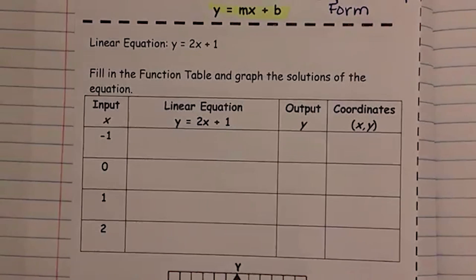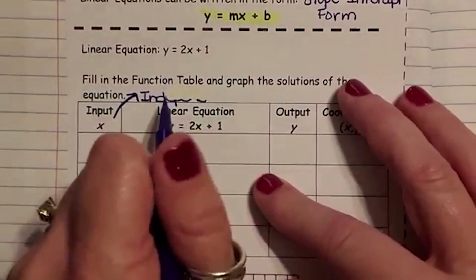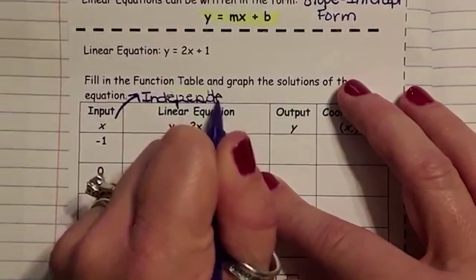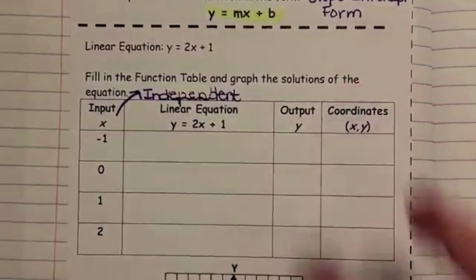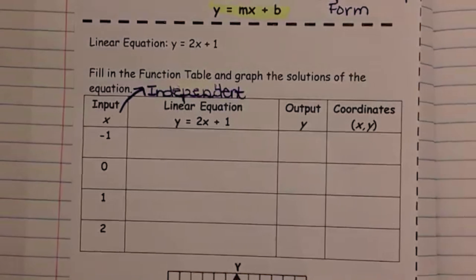Your input or your x. This can be any number you want. You have your input x, which is also the independent value. It can be any number that you want it to be.